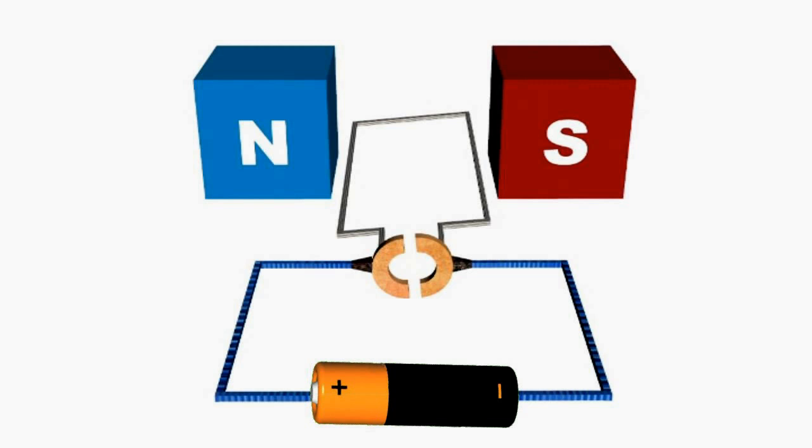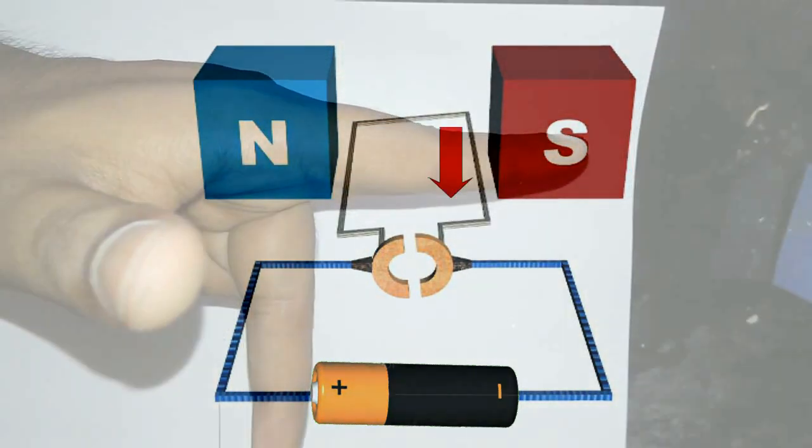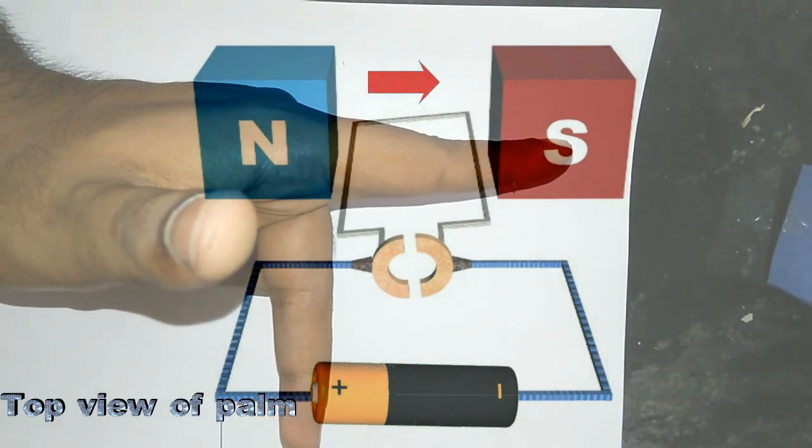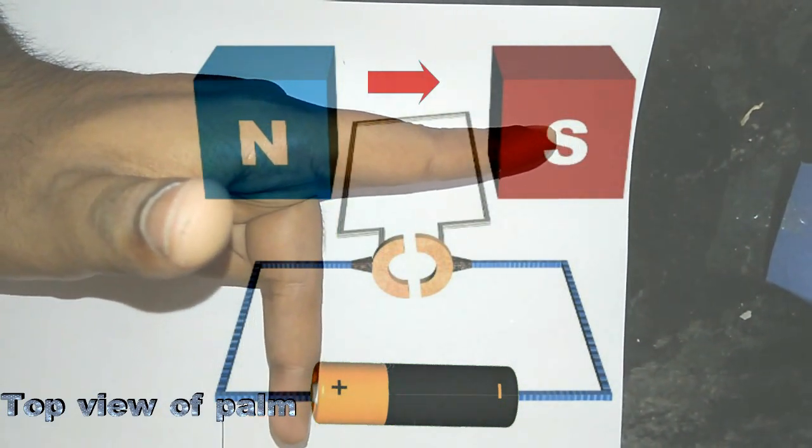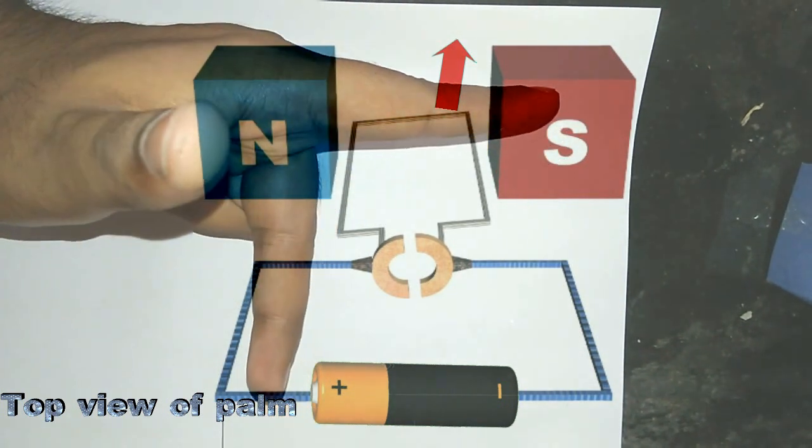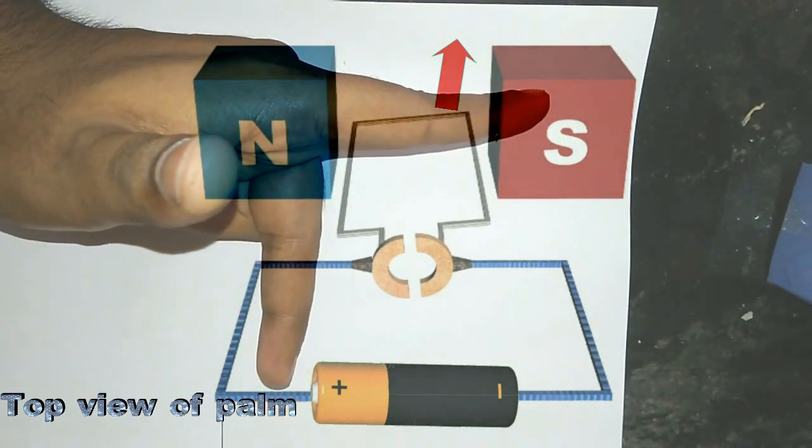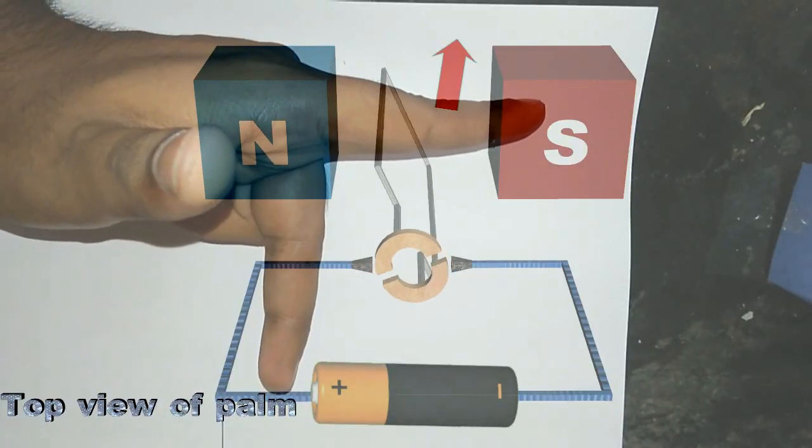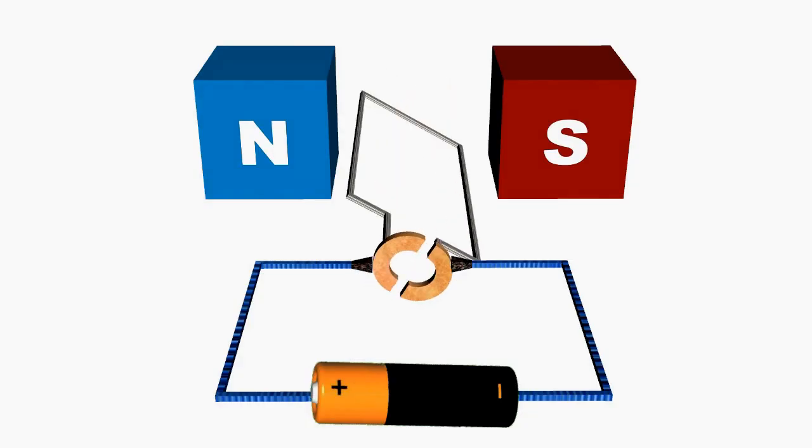Now we move to the opposite arm. Electricity is coming back through this arm, so the direction is opposite. The middle finger is pointing to the direction of electric current, which is reversed. The index finger is pointing to the direction of magnetic field, so the thumb is pointing to the direction of force exerted on the carrier. It is upward, means the arm would move upward.